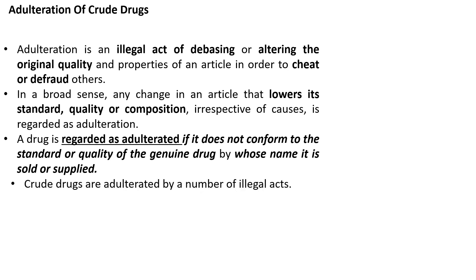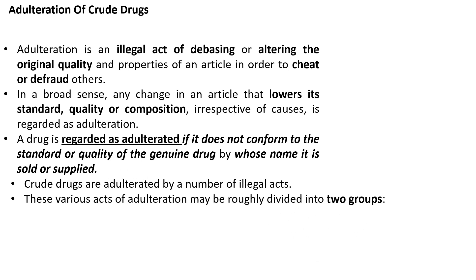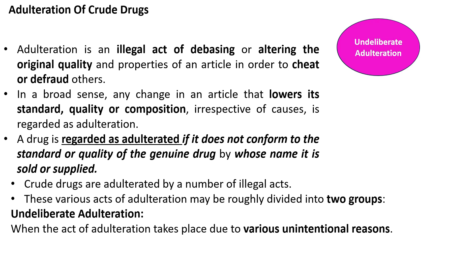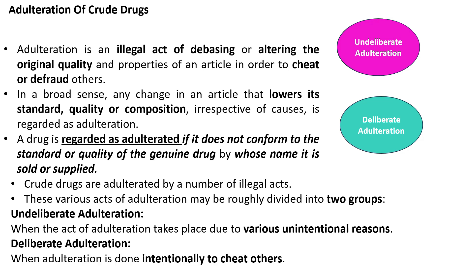Crude drugs are adulterated by a number of illegal acts. These various acts of adulteration may be roughly divided into two groups: undeliberate adulteration, when the act of adulteration takes place due to various unintentional reasons, and deliberate adulteration, when adulteration is done intentionally to cheat others.